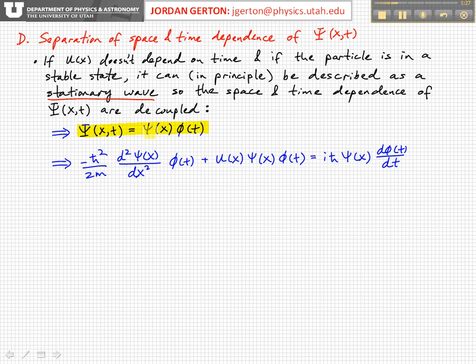Notice I've used the same symbol psi for the spatial part and as the entire wave function. Usually this is clear from context. I've tried to make a slight difference in the notation. The time independent part, psi of x, is sort of a lower case psi, whereas the full wave function with both temporal and spatial parts has sort of a capital psi.